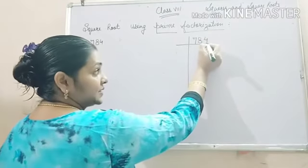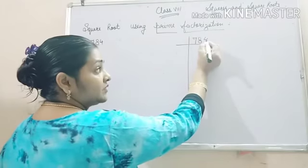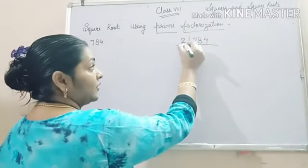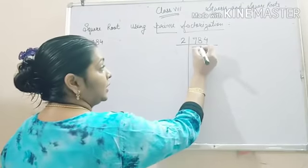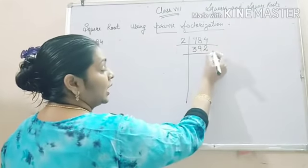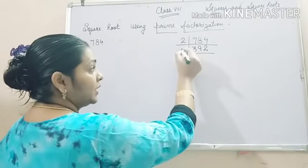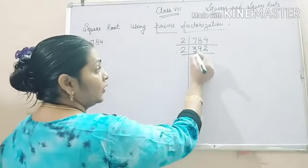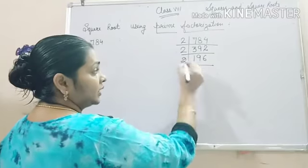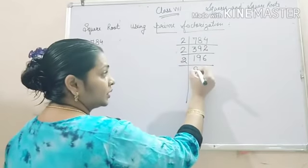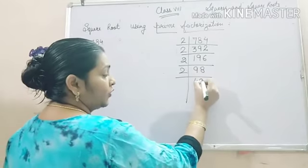So, first of all as the last digit is 4 and 4 is divisible by 2, we will divide it by 2. It will be 392. Again, last digit is 2. That means it is divisible by 2. 196. Again, it is divisible by 2. 98. 49.